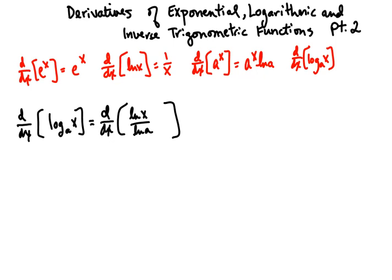And as a constant, this involves the constant multiple rule. And though we're dividing by natural log of a, we could also think of that as multiplying by 1 over the natural log of a times natural log of x.